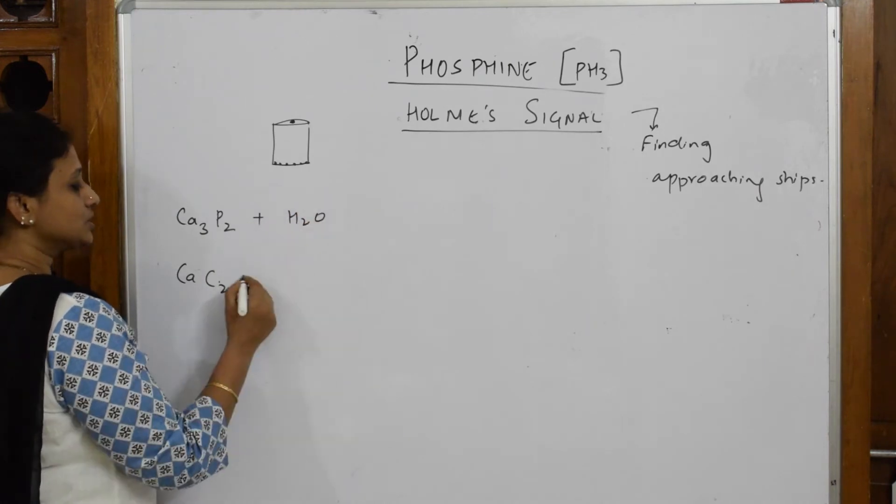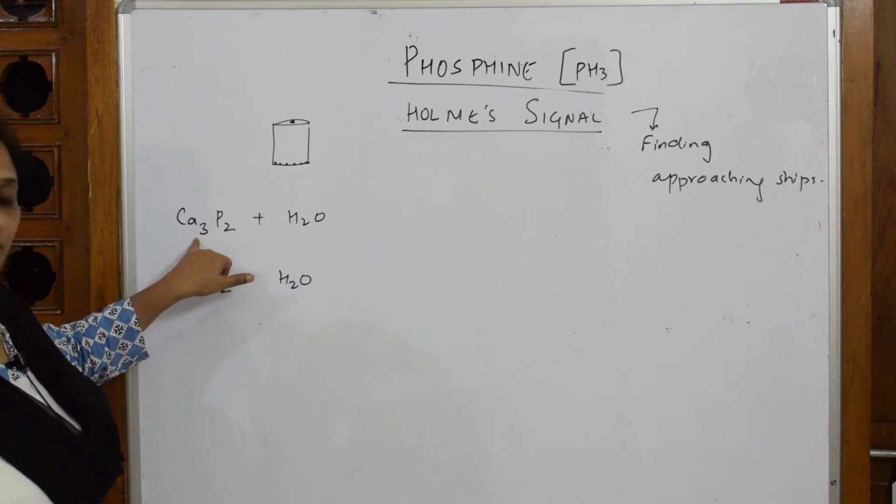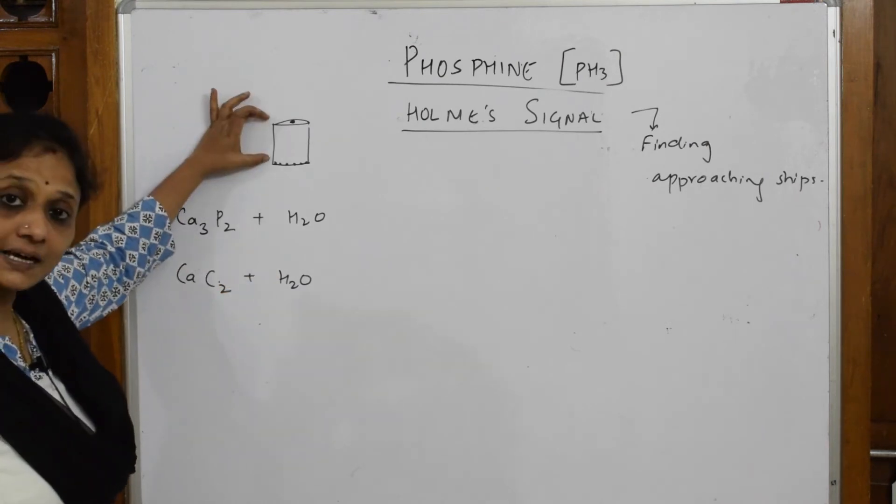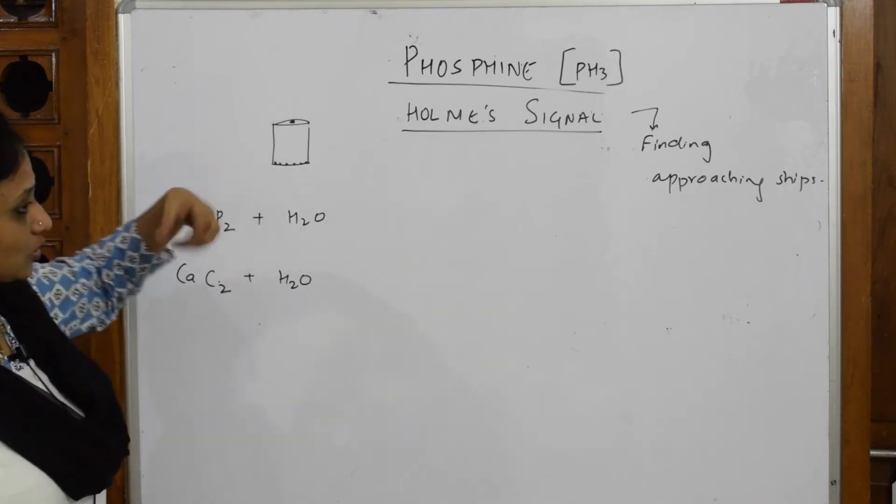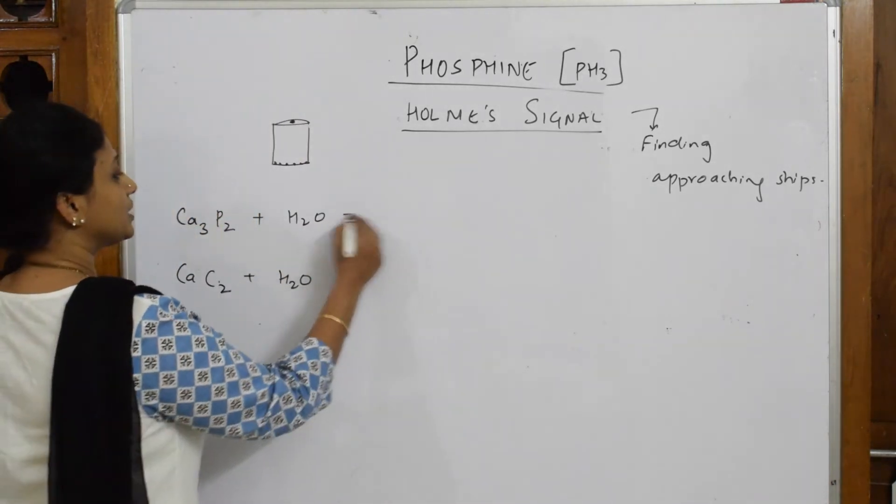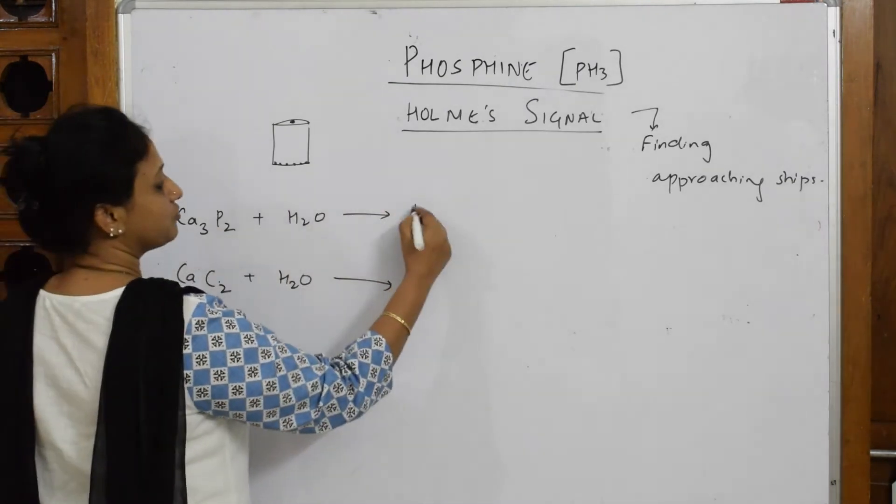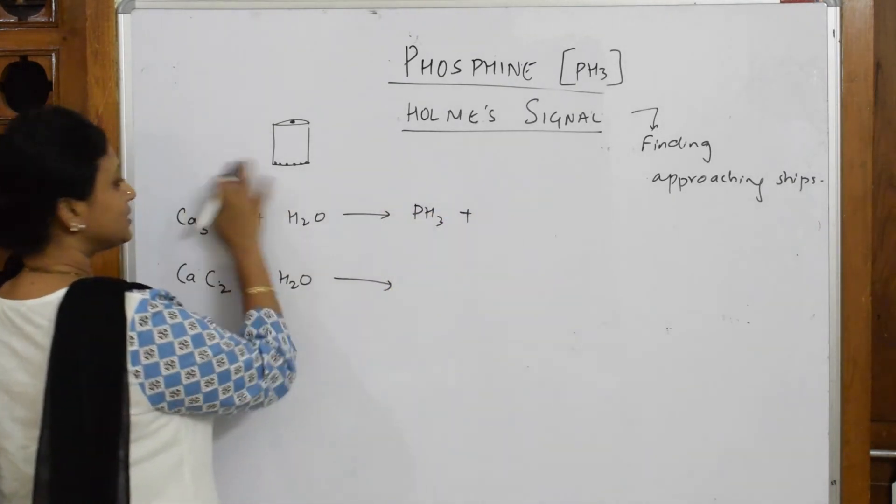To this what am I going to do? I'm going to introduce water. So when calcium phosphide or calcium carbide is taken in the tank and they drop those cans in water, first important thing: the product which is formed is PH3 phosphine along with calcium hydroxide.